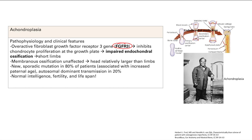Remember there were two types of bone formation. The one that needs a cartilage model is endochondral ossification. Remember what parts of the body need endochondral ossification — it's pretty much all of the body except for the head, clavicle, and facial bones. So you're going to get short limbs, and note that membranous ossification is unaffected, so your head grows fine but your limbs do not, giving you a head that is relatively larger than your limbs.